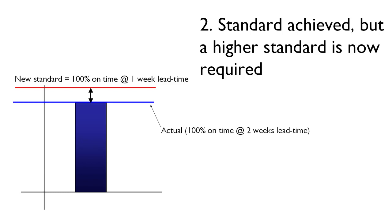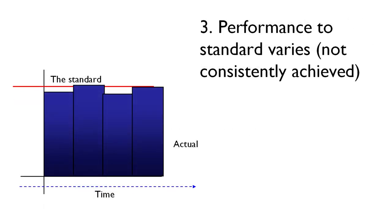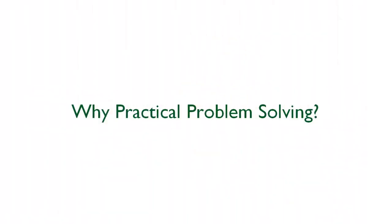And finally, the third type of problem occurs when our performance to the standard varies, meaning it's not consistently achieved. This is actually a form of mura or unevenness, which we first learned about in the Transforming Your Value Streams course. Now that we've been introduced to what a problem is, let's turn our attention to why practical problem solving is such a powerful approach to tackling issues burdening you and your organization.